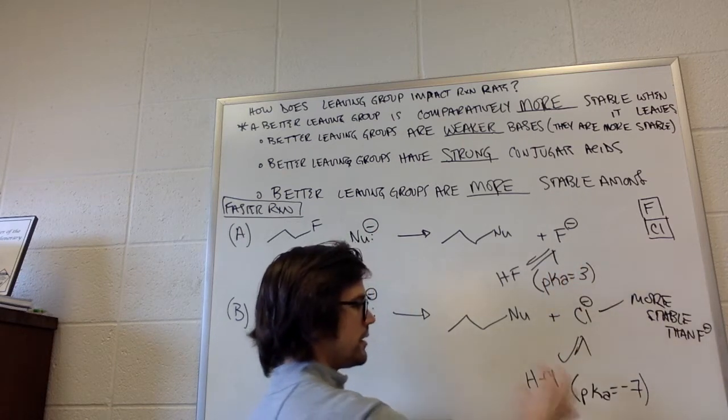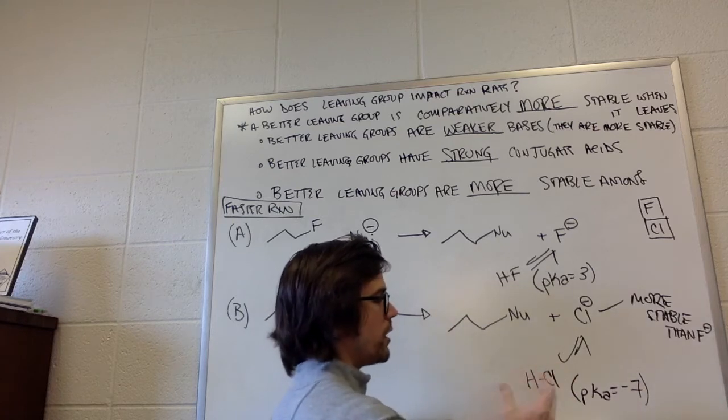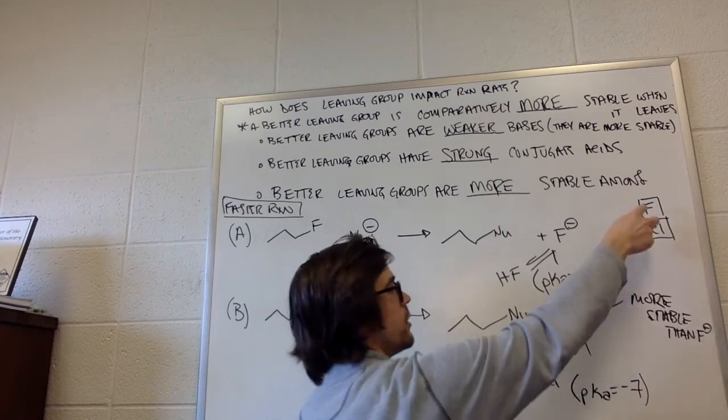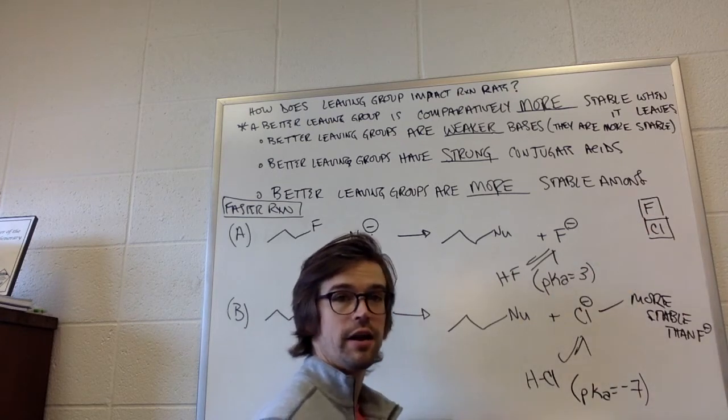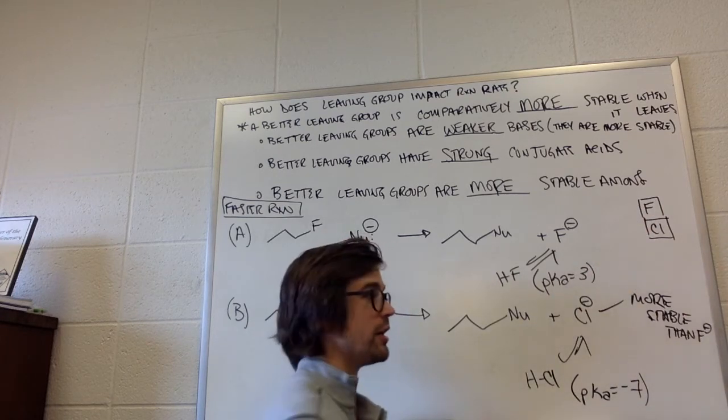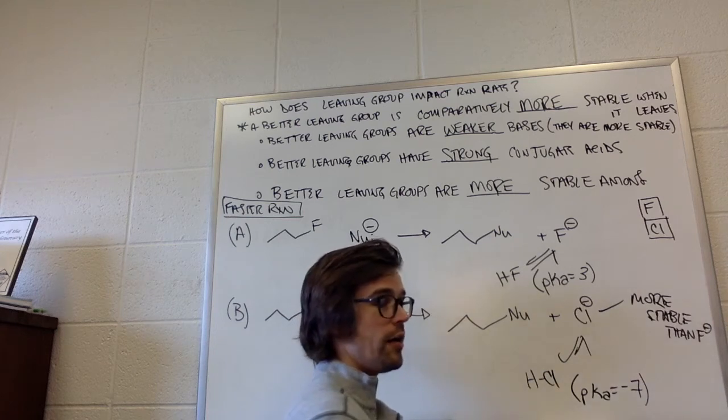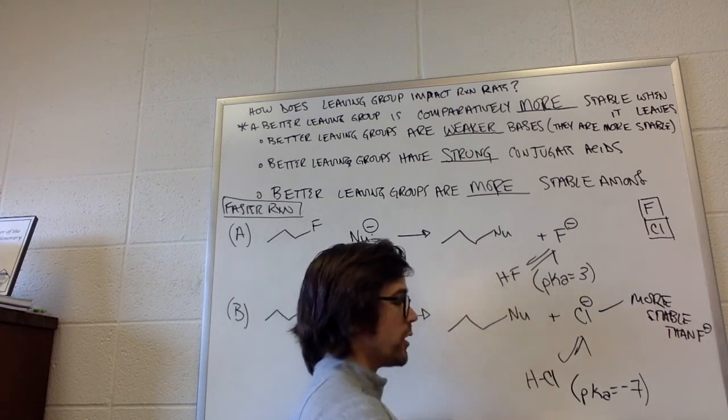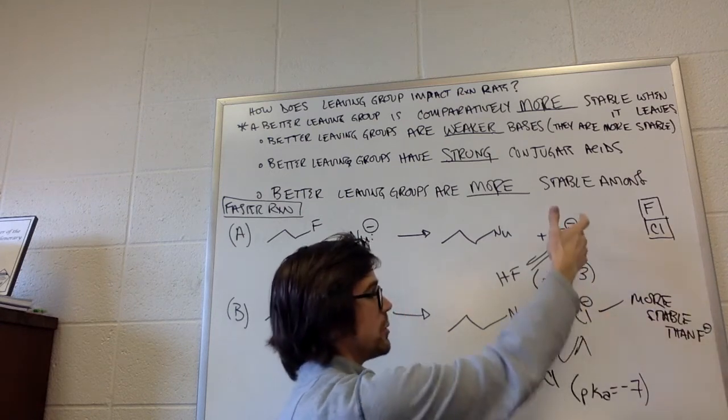So this is the stronger acid. We could have figured that out based on our qualitative reasoning. And that qualitative reasoning was based on the anion stability. And the more stable anion is the more spread out negative charge, which is why chlorine was more stable than fluorine. Chloride is more stable than fluoride.